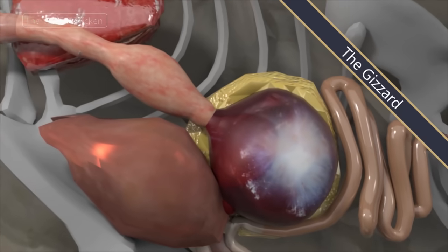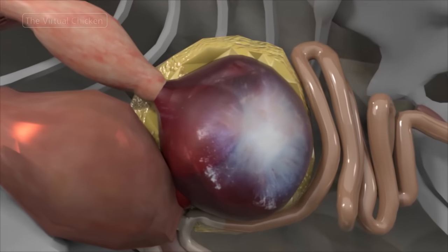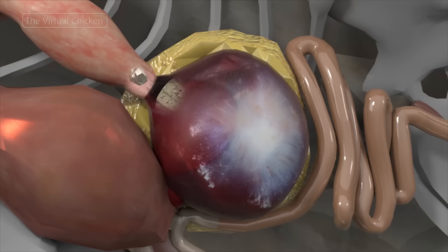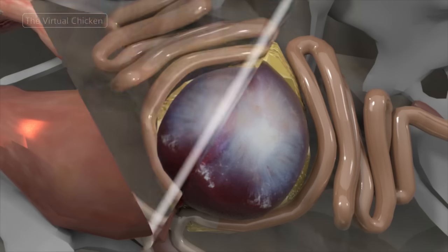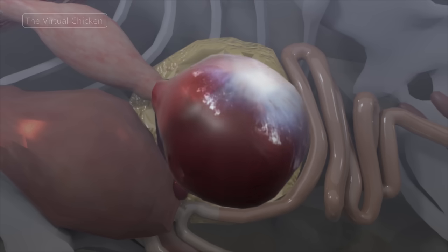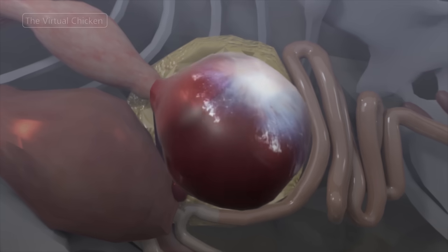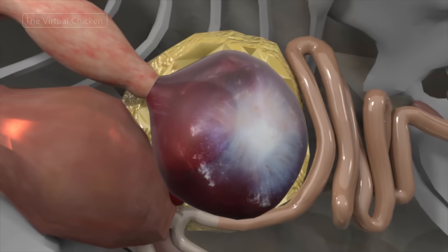The gizzard, or ventriculus, is the muscular stomach where the grinding of food takes place. After being softened by the proventriculus, food moves into the gizzard. It's a round organ with two lobes, one larger than the other.